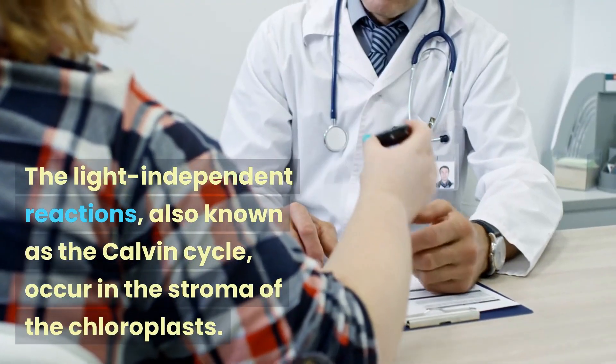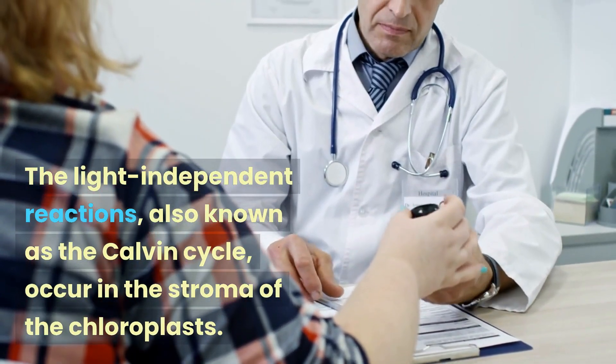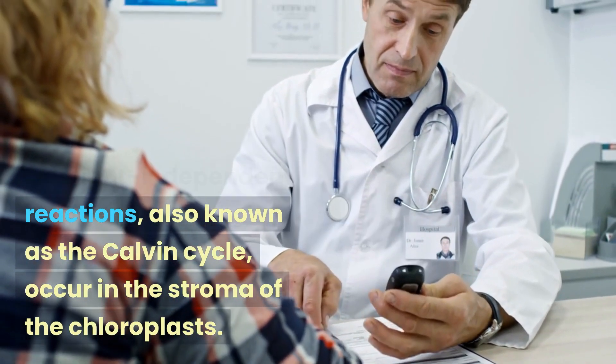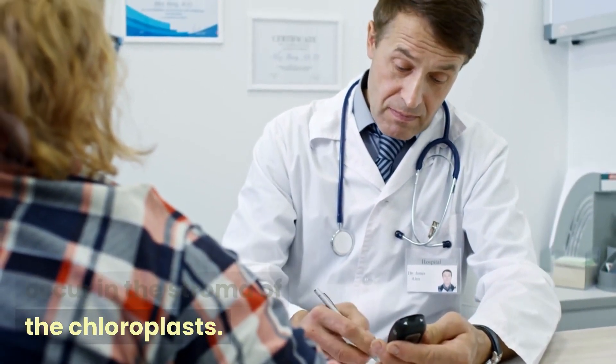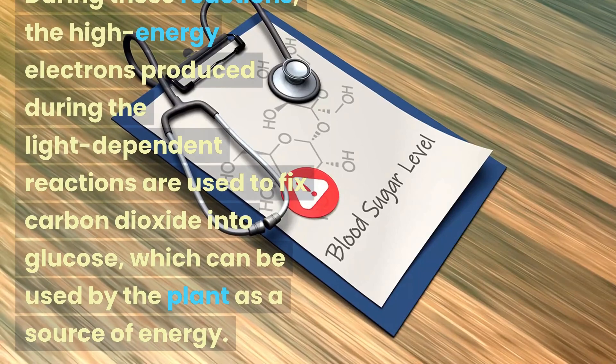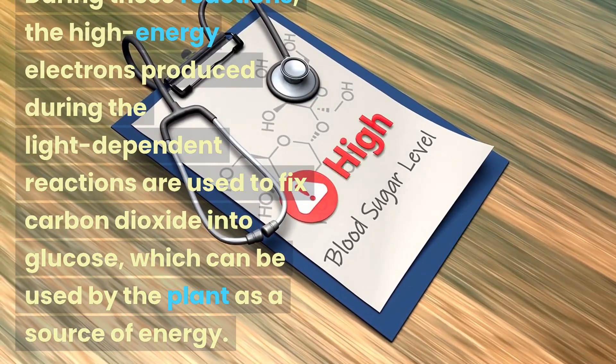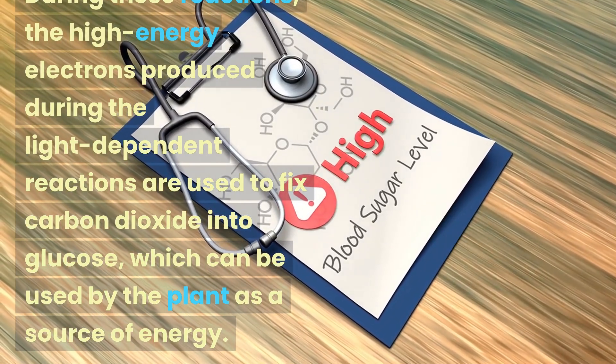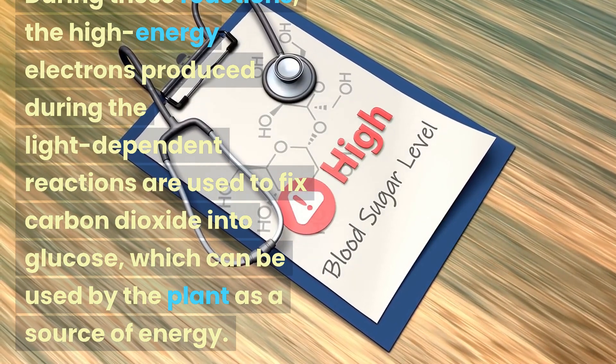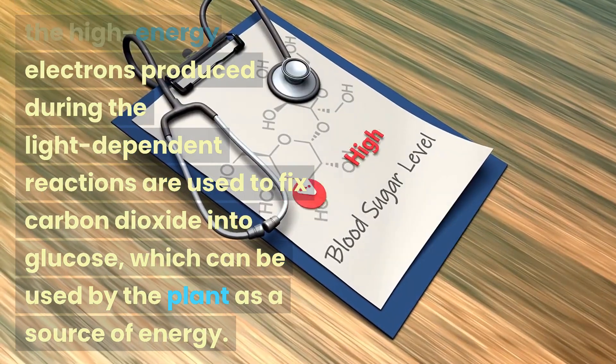The light-independent reactions, also known as the Calvin cycle, occur in the stroma of the chloroplasts. During these reactions, the high-energy electrons produced during the light-dependent reactions are used to fix carbon dioxide into glucose, which can be used by the plant as a source of energy.